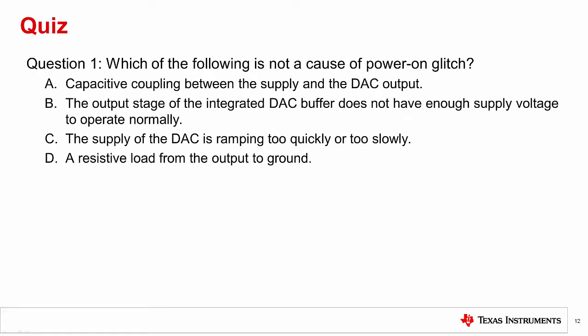Okay, now let's do a short quiz on these topics to test our knowledge. Question 1: Which of the following is not a cause of power-on glitch? A. Capacitive coupling between the supply and the DAC output. B. The output stage of the integrated DAC buffer does not have enough supply margin to operate normally. C. The supply voltage of the DAC is ramping too quickly or too slowly. Or D. A resistive load from the output to ground.